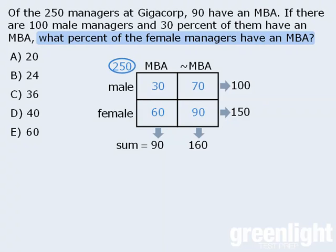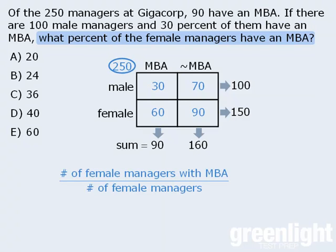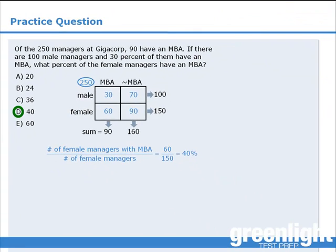Now the question asks us: what percent of the female managers have an MBA? To find this, we need the number of female managers with an MBA and the total number of female managers. There are 60 female managers with an MBA and 150 female managers altogether. This fraction is equal to 40%, so the answer is D.